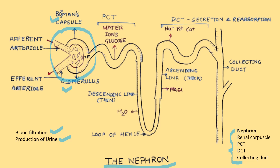Blood enters the glomerulus through the afferent arteriole and leaves via the efferent arteriole. Next comes the proximal convoluted tubule, also called PCT. After filtration in the renal capsule, the filtrate enters the PCT, which is lined with microvilli increasing its surface area for reabsorption of water, ions, glucose, and other essential substances back into the bloodstream.